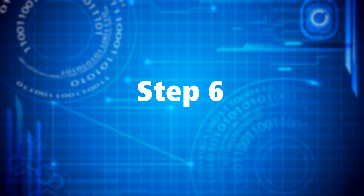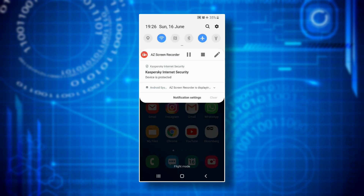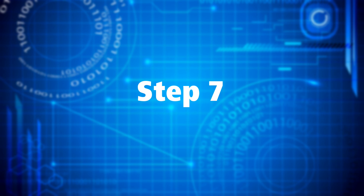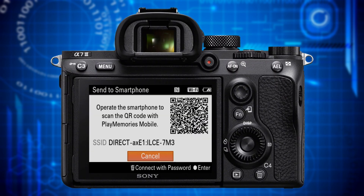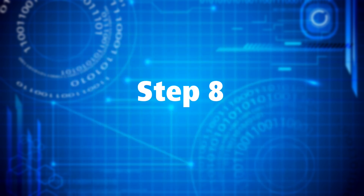Step six: switch off wi-fi on your smartphone. Step seven: cancel the white window with the QR code on your camera and with that inactivate its wi-fi hotspot.